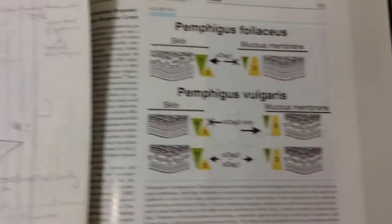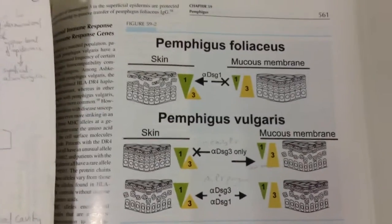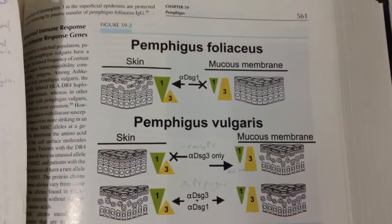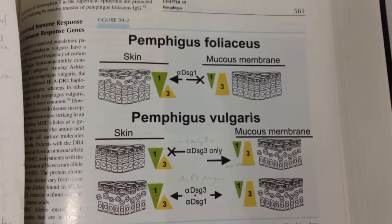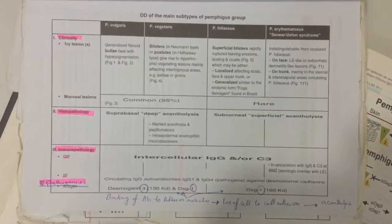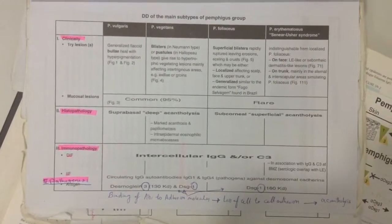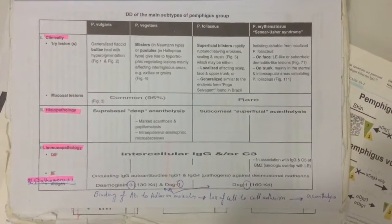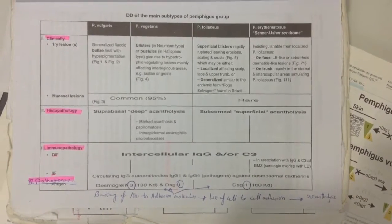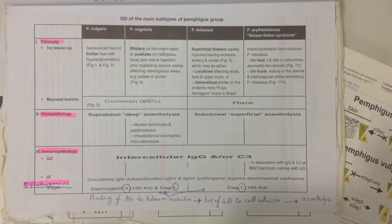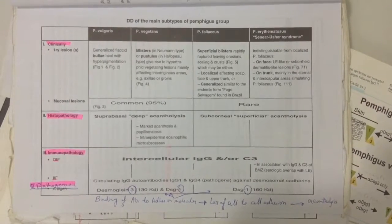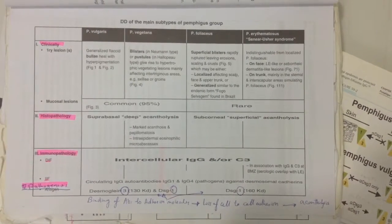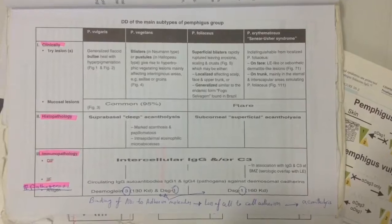Here we can see the distribution of desmoglein 1 and desmoglein 3 in pemphigus foliaceous and vulgaris. In summary for pathogenesis: the antigen in pemphigus vulgaris and vegetans is desmoglein 3 and desmoglein 1; in pemphigus foliaceous and erythematosus it is desmoglein 1. In both cases, binding of autoantibodies to adhesion molecules leads to loss of cell-to-cell adhesion and acantholysis.